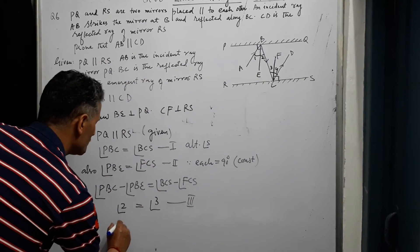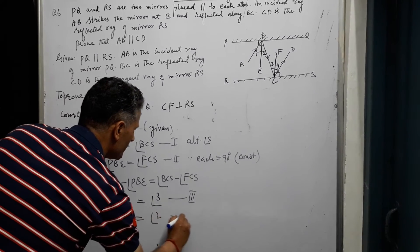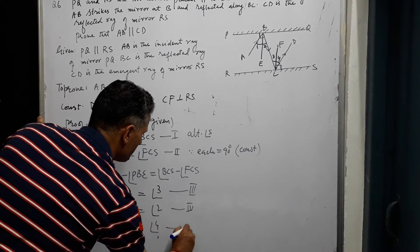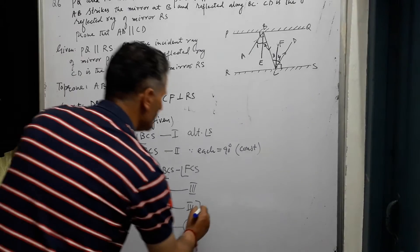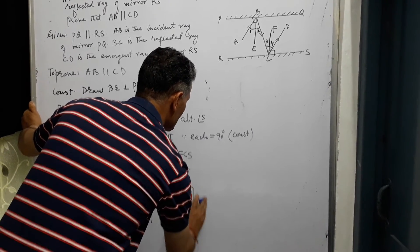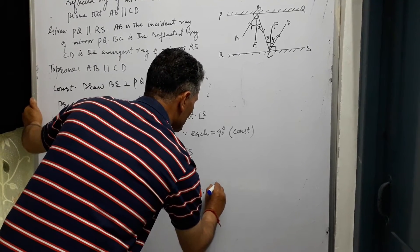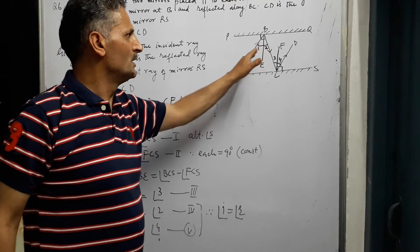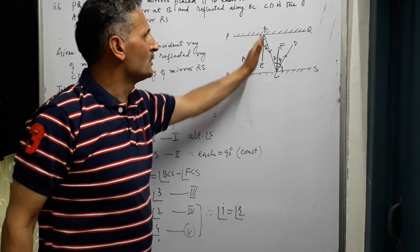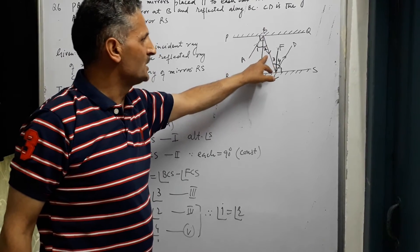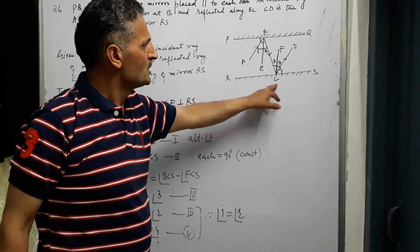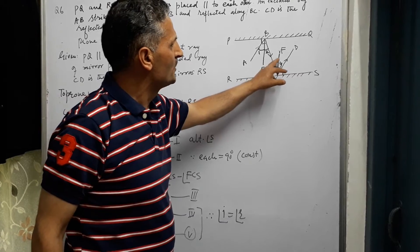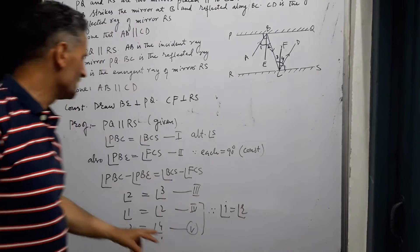Also, angle 1 equals angle 2 — this is equation number 4 — and angle 3 equals angle 4 — this is equation number 5. Why? Because in science you know that angle of incidence equals angle of reflection. Since BE is the normal, the incident ray and reflected ray make equal angles, so angle 1 equals angle 2. Similarly at C, BC is the incident ray, CD is the reflected ray, and CF is the normal, so angle 3 equals angle 4.